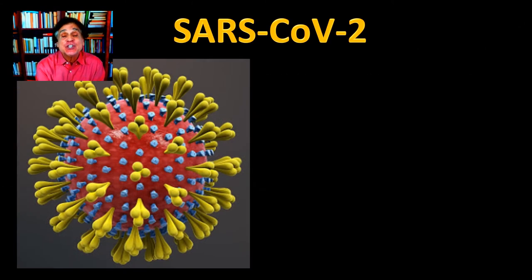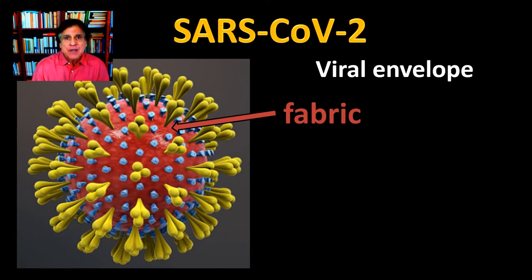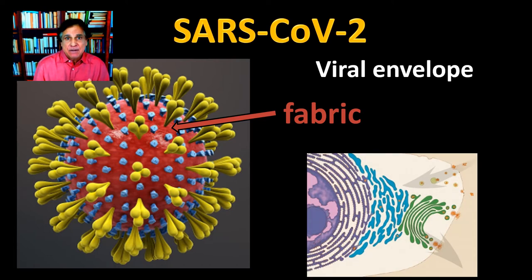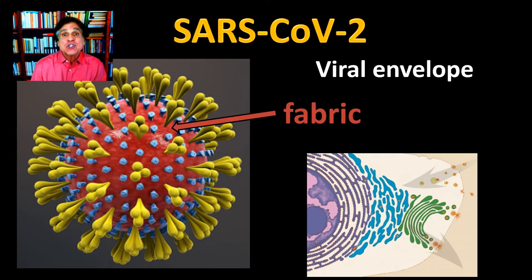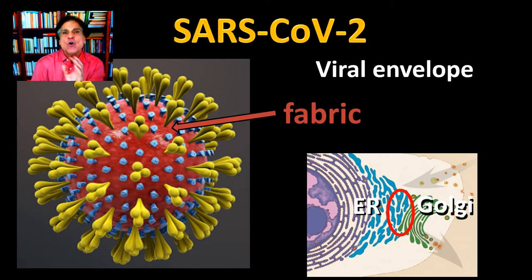Let's look at the structure of SARS-CoV-2. We'll start on the exterior. The outermost part of the virus is called the viral envelope, and this envelope is made of two parts. The first part is the fabric of the envelope — a lipid membrane, the same type of membrane found in cells. This lipid membrane is actually taken from the cells that the virus infects. When new virus particles are assembling, they take a piece of fabric from inside the cell, located between the ER (endoplasmic reticulum) and the Golgi apparatus, and wrap themselves in it.